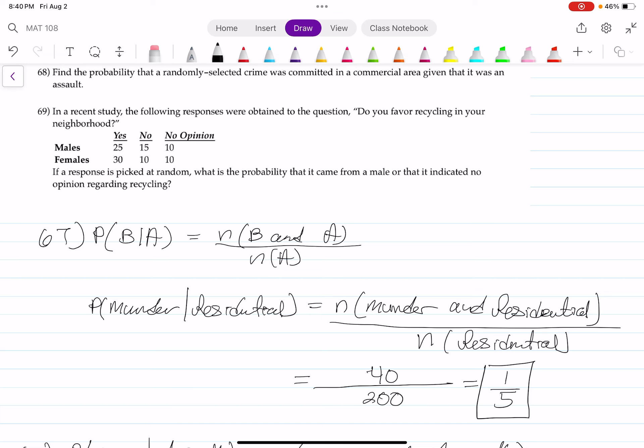If responses picked at random, what is the probability that it came from a male or female that indicated no opinion regarding recycling? So, basically, we want to find the probability that they had no opinion, whether it's a male or a female.